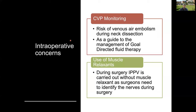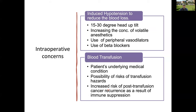CVP monitoring is useful because of the risk of venous air embolism during neck dissection, and it also helps guide fluid therapy. During surgery, IPPV is carried out; in some patients nerve monitoring is required, so muscle relaxants may need to be transiently withheld for intraoperative cervical nerve monitoring. Head-up position along with increased volatile anesthetic, peripheral vasodilators, and beta blockers can be used to induce deliberate hypotension. Blood transfusion is guided by the patient's medical condition, and in cancer patients transfusion has been linked to cancer recurrence.